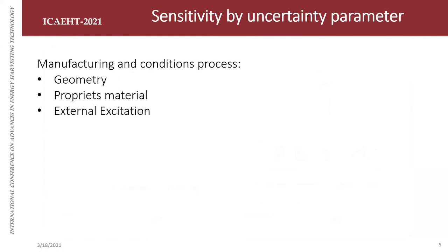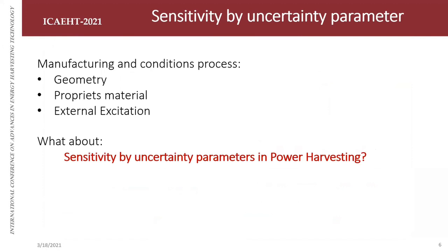Now I ask you to imagine this system in a real condition where we need to take into account uncertainties and errors, mainly from manufacturing processes or environmental conditions. We have geometry, properties of materials, or even external excitation as stochastic variables. A great question arises: what happens with these uncertain parameters in our power harvesting performance, since this system has high sensitivity?